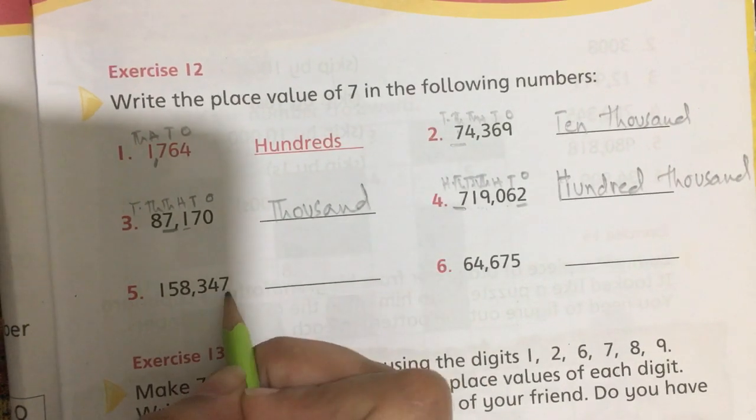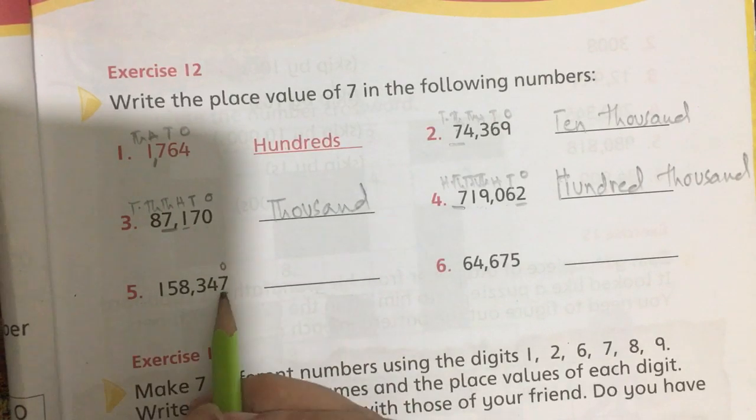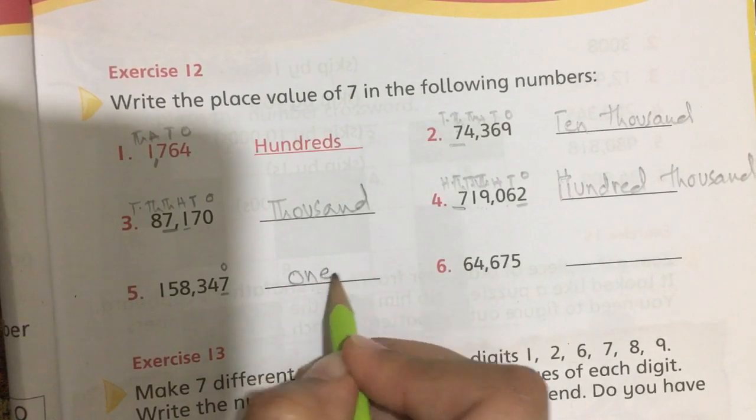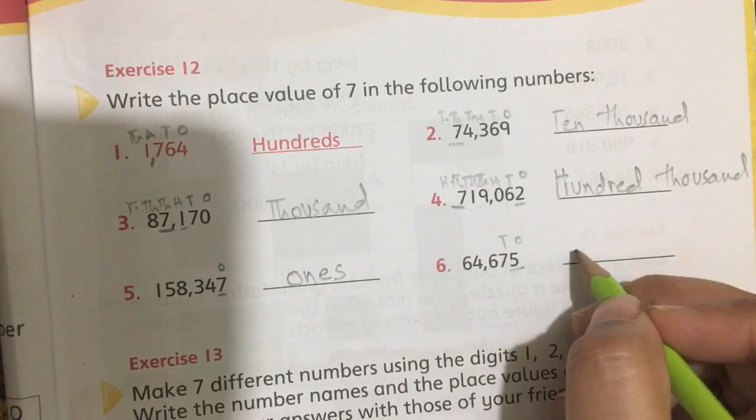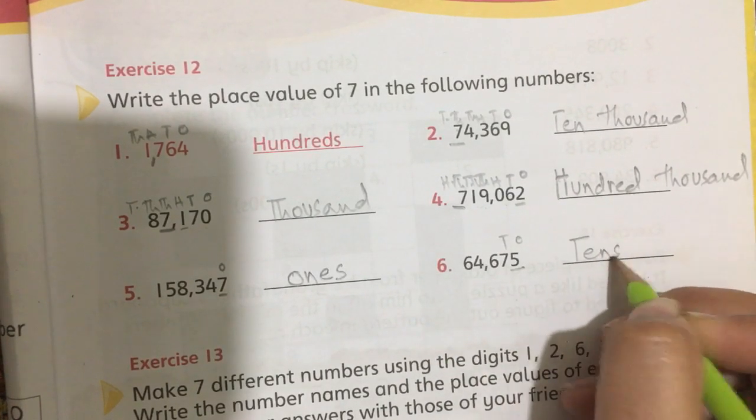Question number 5: the 7 has a place value of ones in this number. In question 6, the 7 has a place value of tens.